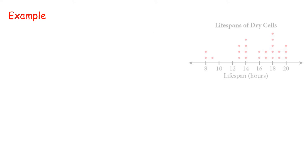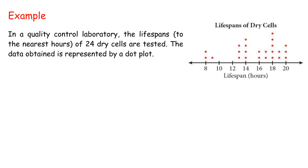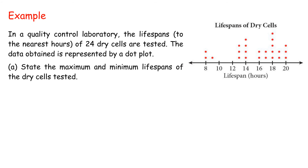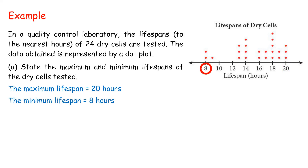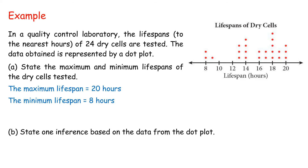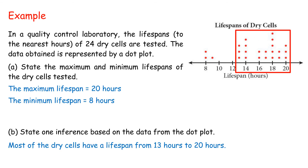Example: In a quality control laboratory, the lifespans (to the nearest hour) of 24 dry cells are tested, represented by a dot plot. A. Maximum lifespan = 20 hours; minimum lifespan = 8 hours. B. Inference: most of the dry cells have a lifespan from 13 hours to 20 hours.